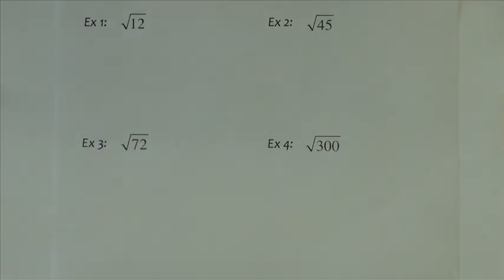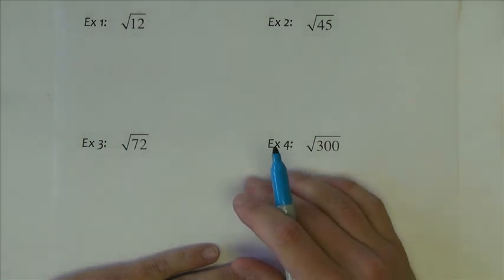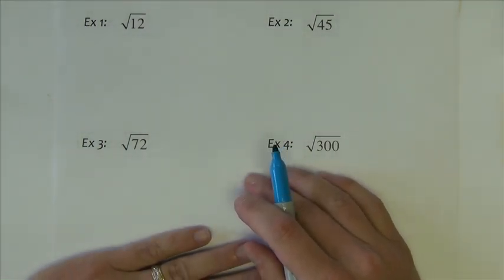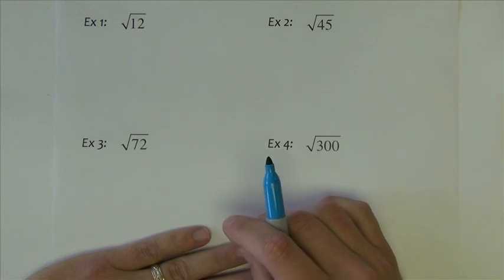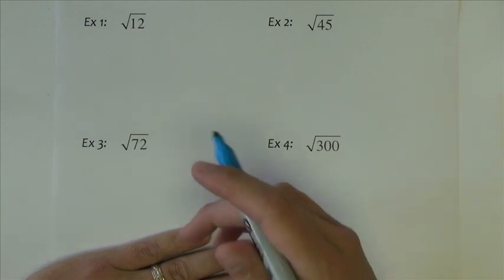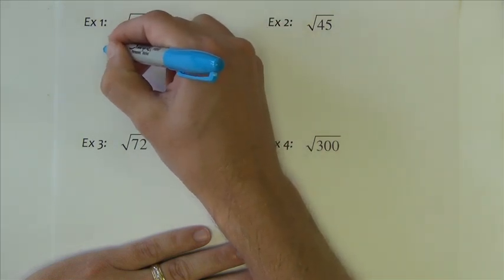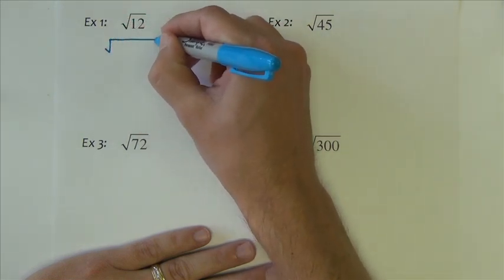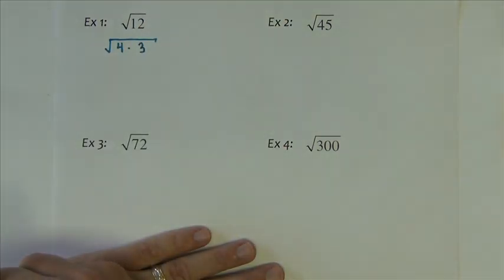On this slide we see a variety of examples. The directions for all of them are going to be to simplify the radical. And we're going to simplify all of them with the product property that we saw on the last slide. So what we want to do on each one of these problems is rewrite the number underneath the radical as a product of two numbers.